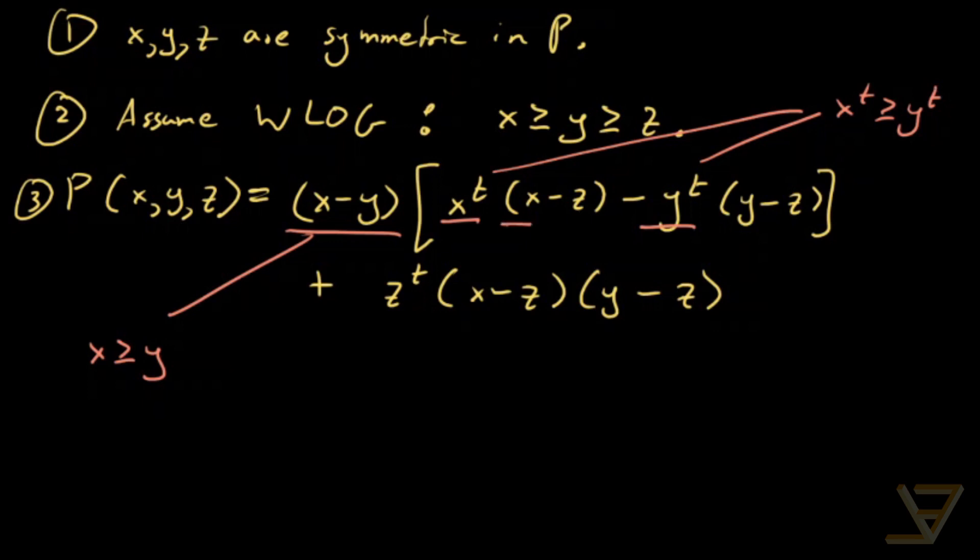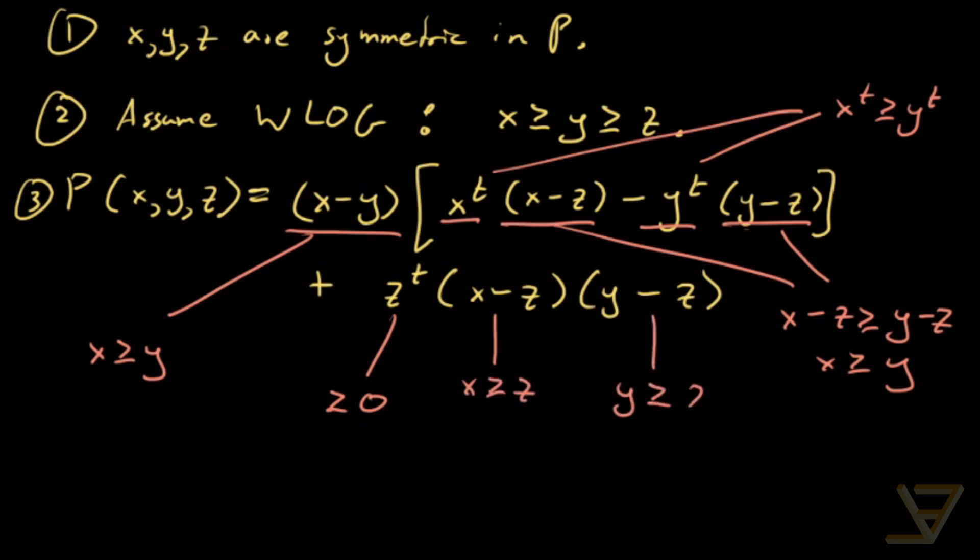And we find that (x-z) and (y-z) can be compared as (x-z) ≥ (y-z) because x ≥ y. And over here z^t ≥ 0, x ≥ z, and y ≥ z. So this whole thing,